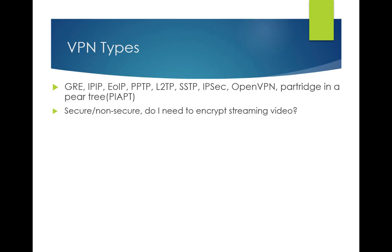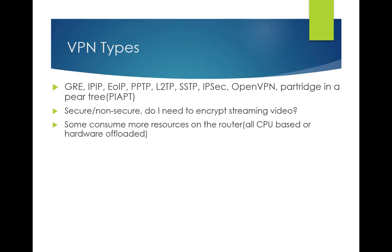On your tunnels, there are options for secure or non-secure. Do I need to have this information encrypted, and if so, how complex does that encryption need to be? In this instance it's just streaming video and I don't care if anybody sees it, so it's a non-issue for me. Different tunnel types consume different amounts of resources on the router — a lot of these are CPU-based, so there will be CPU cycles associated with that. Generally, the more complex the encryption, the more load on your router. Some routers actually have hardware offload for encryption, so keep that in mind.